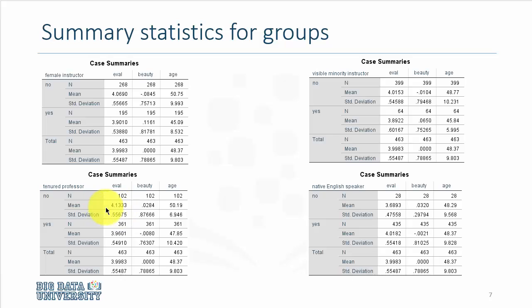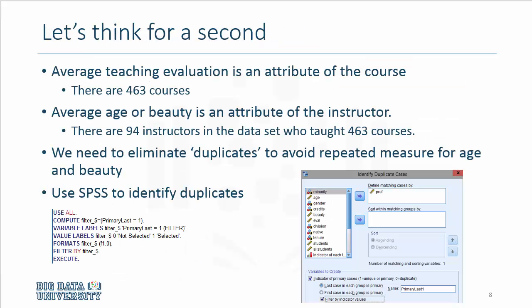The average age of untenured professors was 50.2 years and that for tenured professors was 47.85 years. One thing that is very important in statistical analysis is to think about the question and the population or sample that you are working with. We are computing averages across 463 courses, but age and beauty are attributes of instructors.